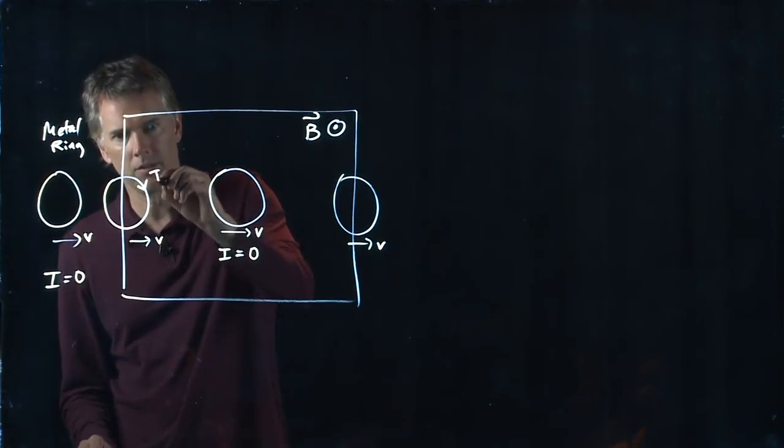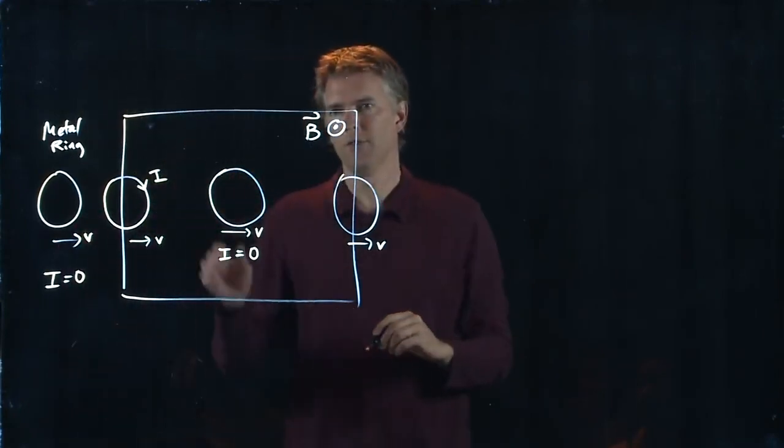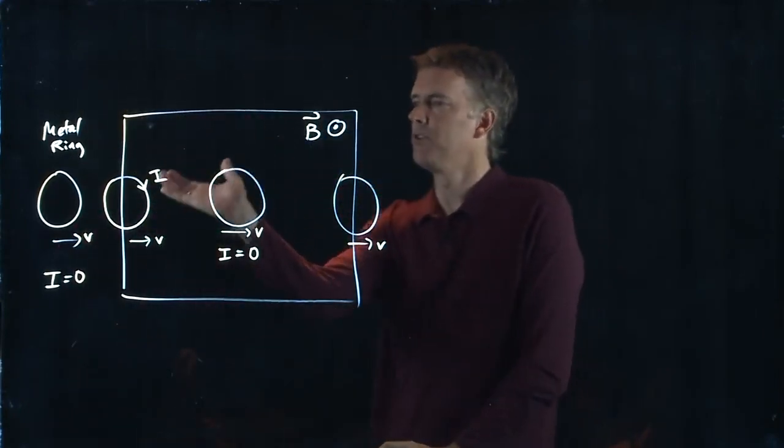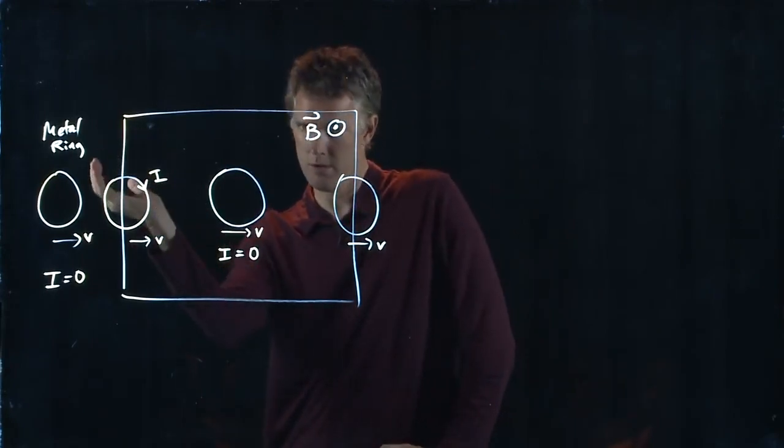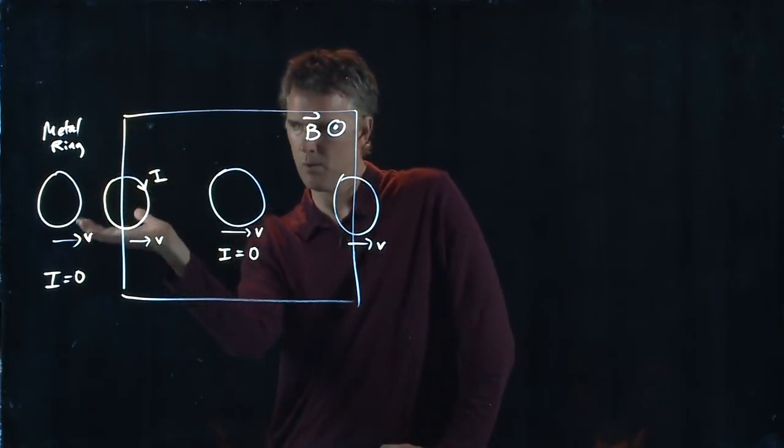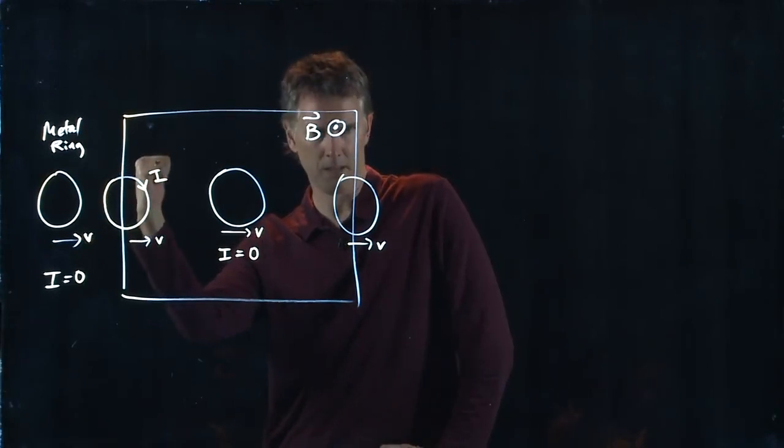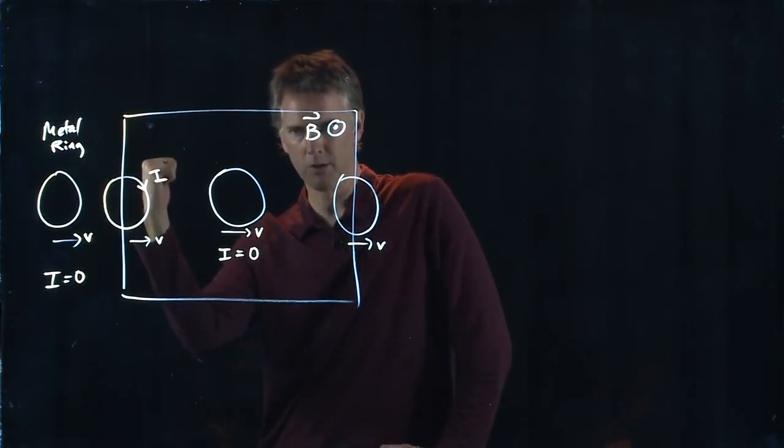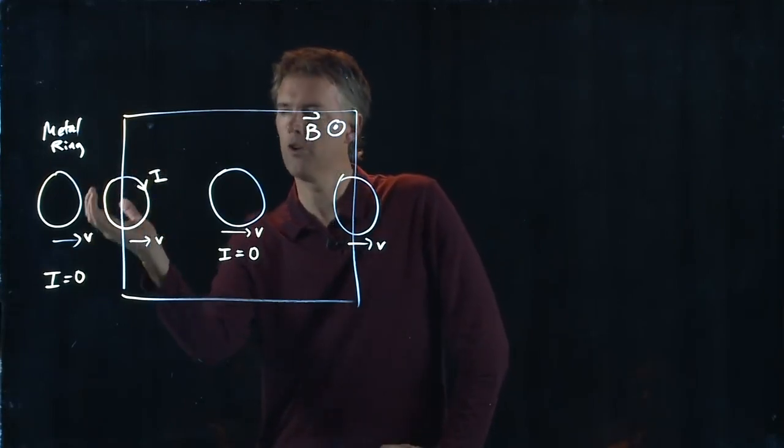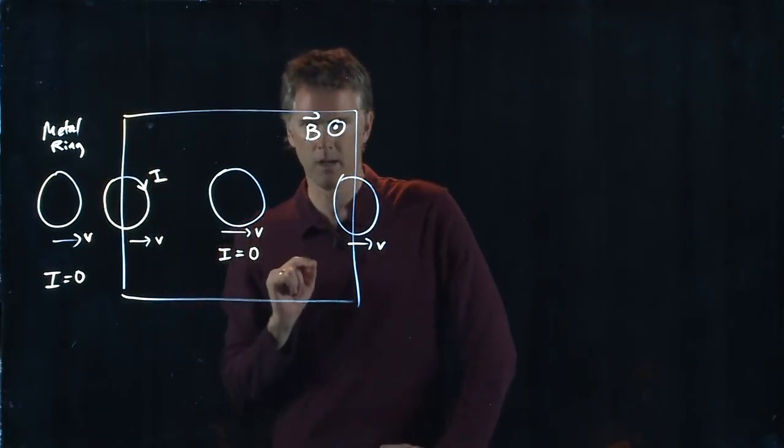It does it like this. If you take your right hand and you put your fingers in the direction of the current, I'm going to wrap my fingers around in the direction of the current, my thumb is telling me that that will make a B field going into the screen. So current is going to develop in the ring in that direction.